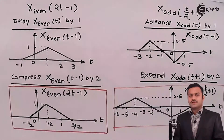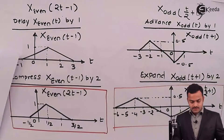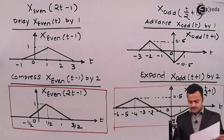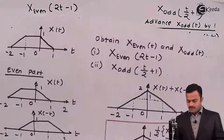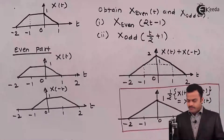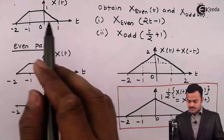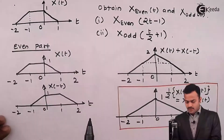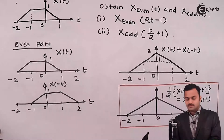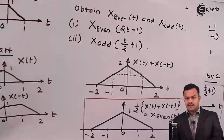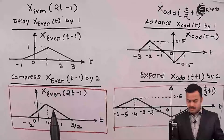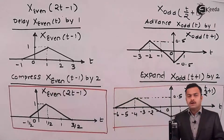So what we have seen: x(t) was given. We obtained the even and odd parts, and once the even and odd parts were known, we shifted and time-scaled those parts to get the required signals.